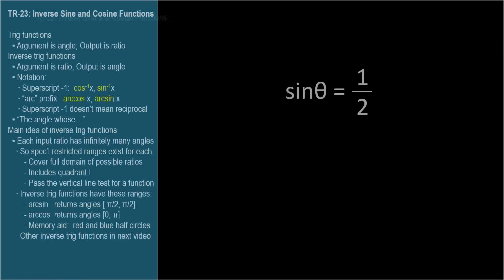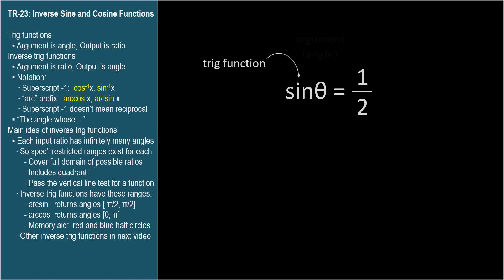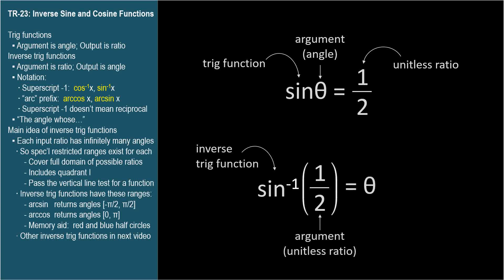A trig function has an angle as its argument and evaluates to a unitless ratio denoting the value of the trig function as we've described in previous videos. So a trig function's inverse would have a unitless ratio as its argument and return the angle having that ratio as its trig function value.